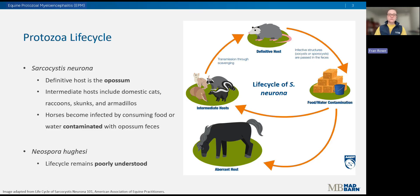Horses become infected the same way intermediate hosts do — by consuming feed or water contaminated with opossum feces infected with S. neurona. However, equids are not part of this parasite's normal life cycle; horses are considered a dead-end or aberrant host. This means that when horses consume those parasitic eggs, the parasite cannot complete its normal life cycle and gets stuck inside the horse. As such, infected horses pose no risk of transmission to other horses.